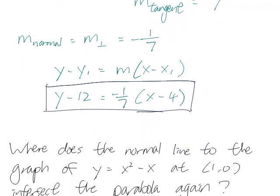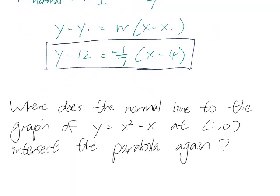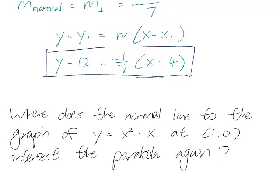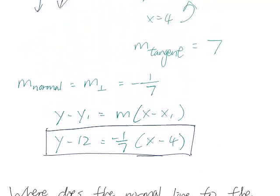Let's look at the second problem here, where does the normal line to the graph of y equals x squared minus x at (1, 0) intersect the parabola again. So let's go back and look at the diagram.